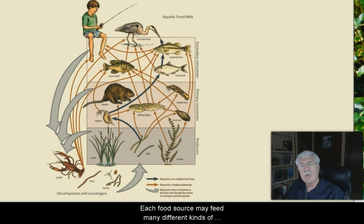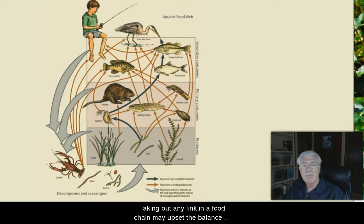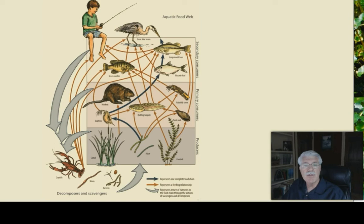Each food source may feed on many different kinds of animals. Food web diagrams, such as shown here, show how different food chains are interconnected. Taking out any link in a food chain may upset the balance of the whole food web.